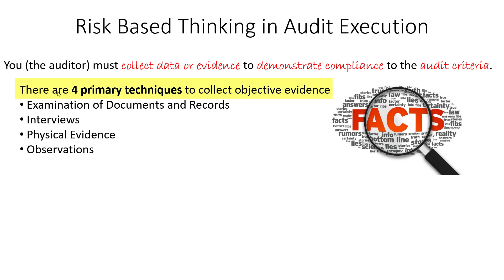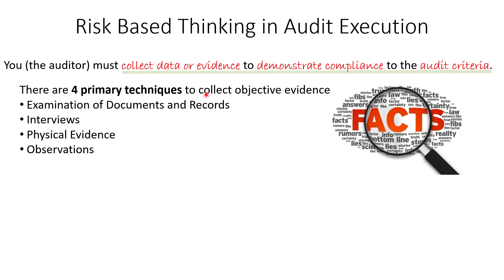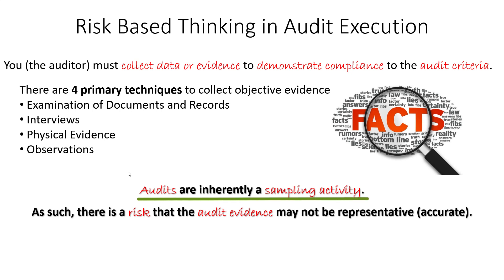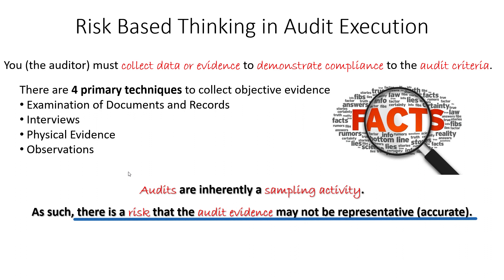When you're executing an audit, there are four primary techniques you can use to collect data: examining records, interviewing folks, collecting physical evidence, or making observations on the production floor. I want to emphasize that auditing is inherently a sampling activity — like acceptance sampling or hypothesis testing, we're taking a sample and using it to make inferences about a population. Because we're only taking a sample, there is an inherent risk that our evidence may not be representative of the population and our conclusion in the audit may not be accurate.